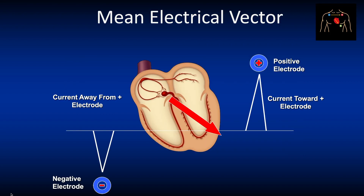Let's briefly discuss the mean electrical vector. Always remember that the electrical signal of the heart has a direction, typically as shown by the red arrow. ECG and monitor leads look at the signal from different directions, from positive and negative electrodes. Based on whether the signal is moving towards or away from certain electrodes, an upright or negative deflection occurs on the ECG. If the electrical conduction moves towards a positive lead, a positive or upward deflection occurs. If the current moves towards a negative electrode — meaning away from the positive lead — a downward or negative deflection happens.